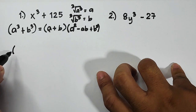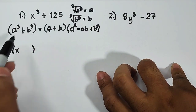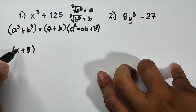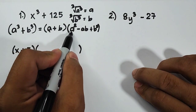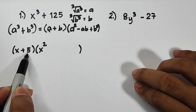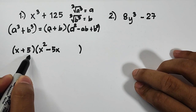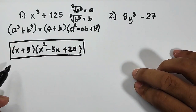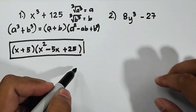Now let's apply this to x cube plus 125. For the binomial factor: the cube root of x cube is x, the cube root of 125 is 5, copy the plus sign — so the binomial factor is x plus 5. For the trinomial factor: square the first term to get x squared; multiply x times 5 to get 5x, and since the sign was plus, this becomes minus 5x; then square the last term — 5 squared is 25, so plus 25. The factors of x cube plus 125 are (x + 5)(x² − 5x + 25).